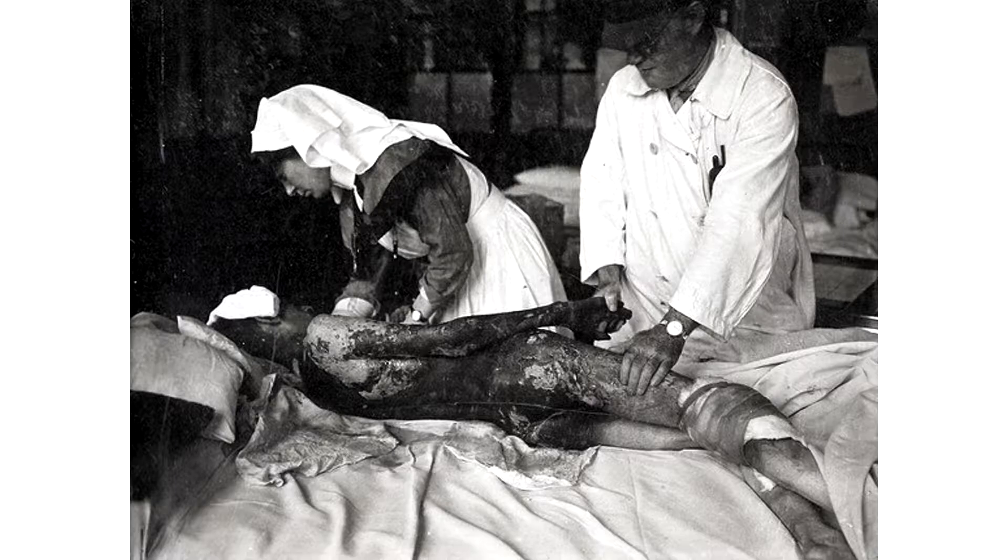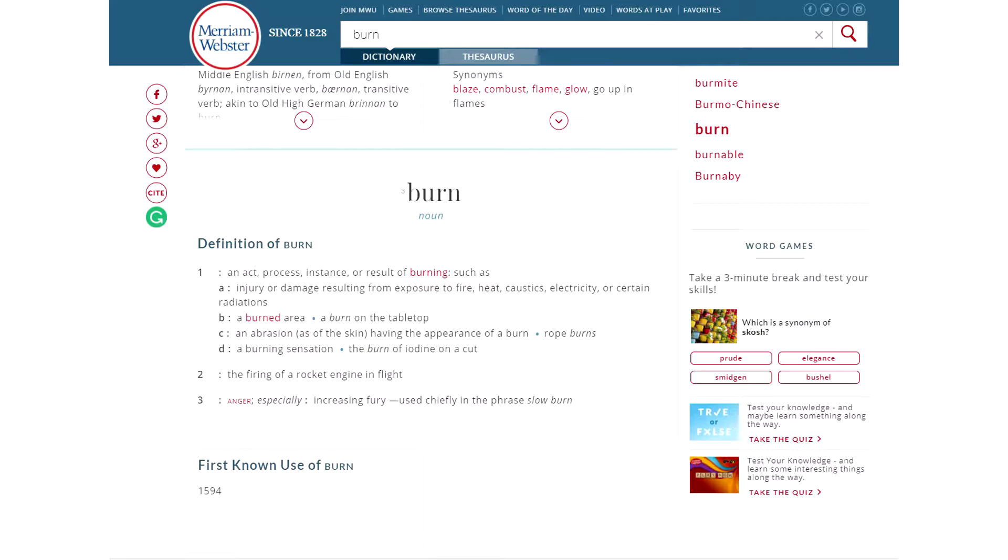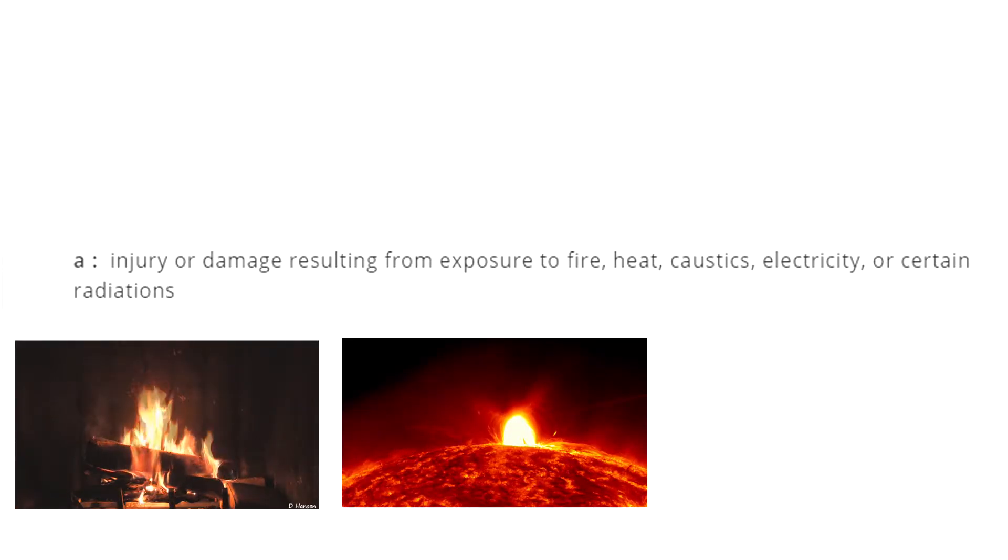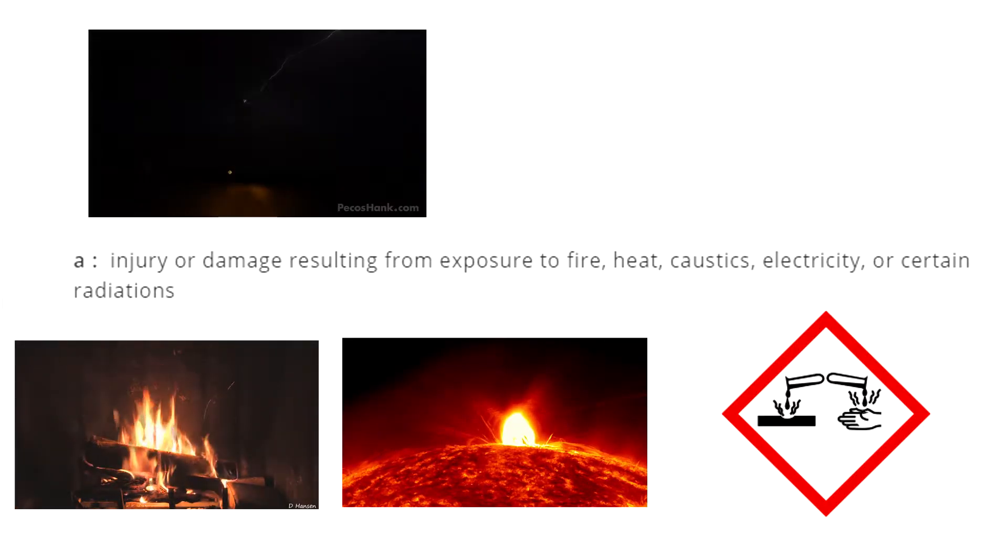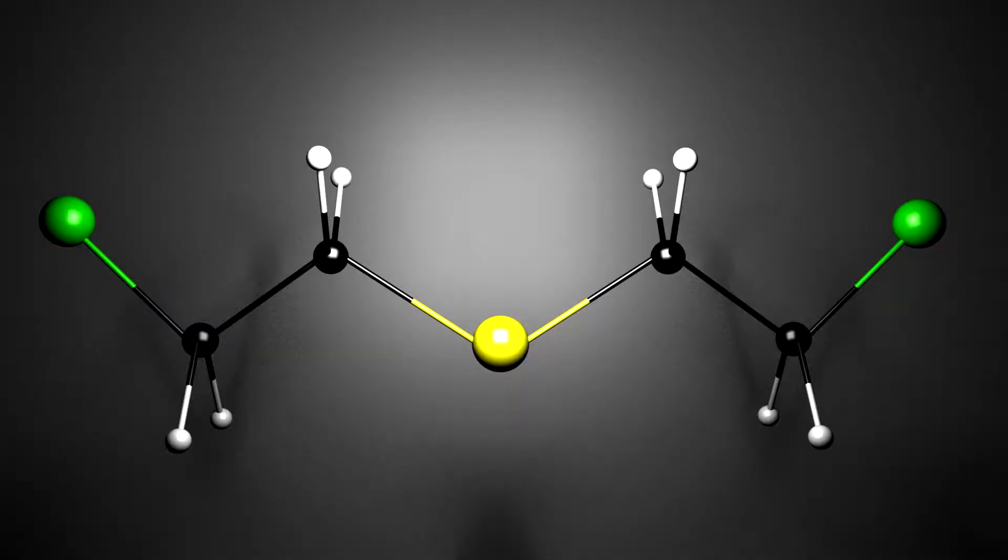Now let's move on to the more complex function of sulfur mustard, which is all the blistering and burns it can produce. First, let's define the word burn. For most of us, we might think of it specifically as an injury from heat. However, our trusty Merriam-Webster dictionary expands this by saying an injury or damage resulting from exposure to fire, heat, caustics, electricity, or certain radiations. A very important property of sulfur mustard is that it is a nucleophilic alkylating agent.